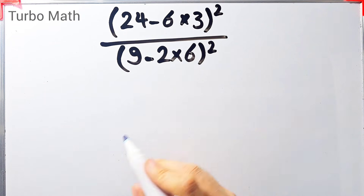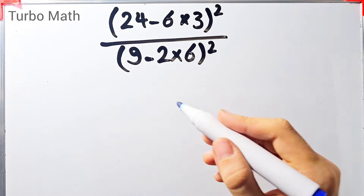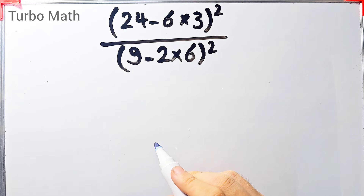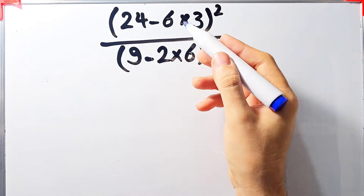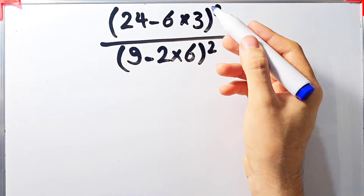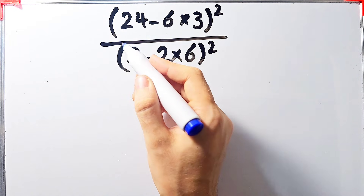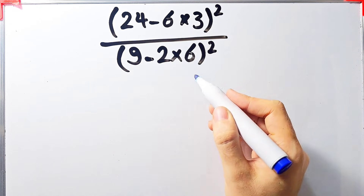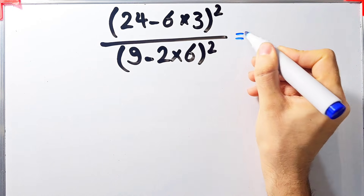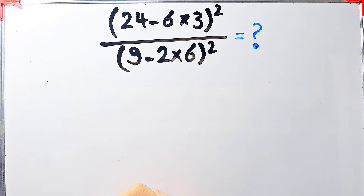Hi friends, welcome to Turbo Math channel. Many people when they see this question don't know which operation to do first, so they might get it wrong. The question is: open parenthesis 24 minus 6 times 3 close parenthesis, all to the power of 2, over open parenthesis 9 minus 2 times 6 close parenthesis, all to the power of 2. What is the answer? Can you solve it?